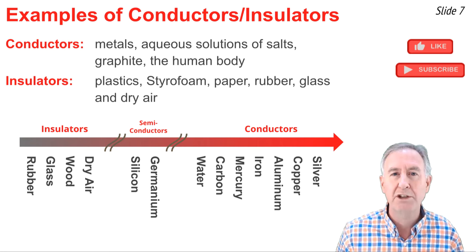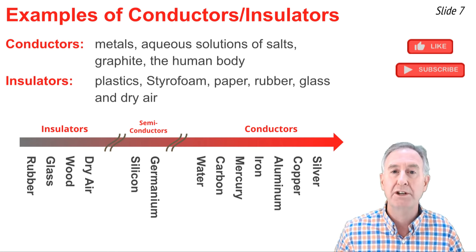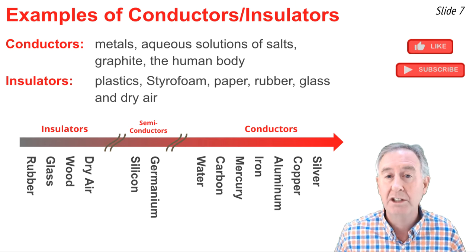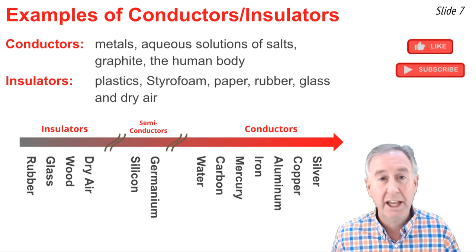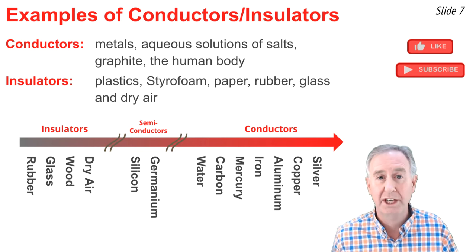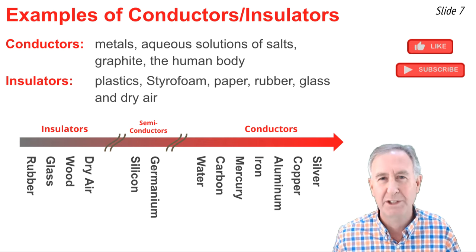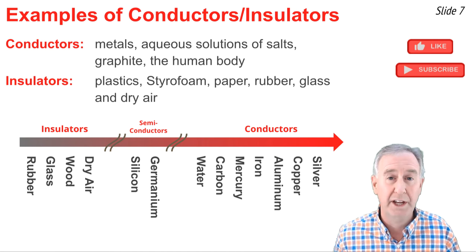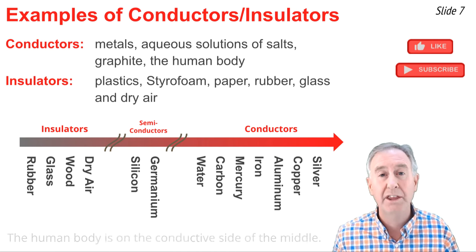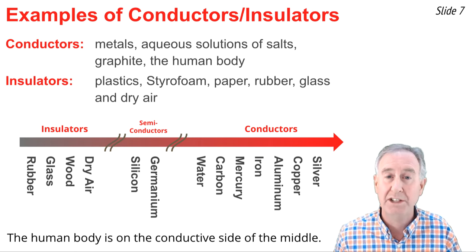It's best to think in terms of a continuum when it comes to conductors and insulators. At the far right of the continuum are the metals, like silver. At the left side are the insulators. In the middle are the metalloids of the periodic table — the semiconductors, the gray of this continuum. Three materials worth pointing out are dry air, water, and the human body, which on the continuum would fall on the conducting side of the middle.